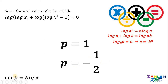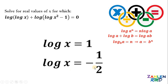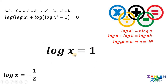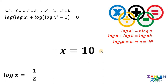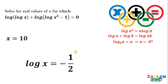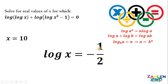Since p equals logarithm of x, we substitute back. For the first result, logarithm of x equals 1. Converting to exponential form gives x equals 10 raised to 1, which is 10. Therefore, we have one real solution: x equals 10. For the second result, we have logarithm of x equals negative one-half.